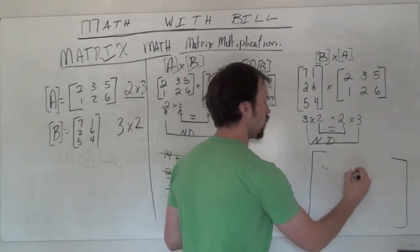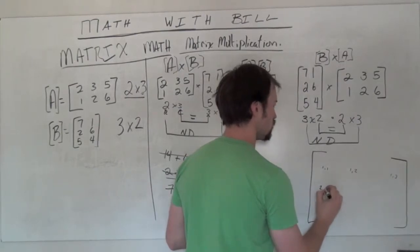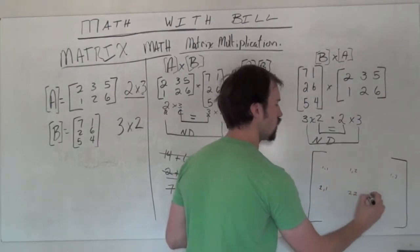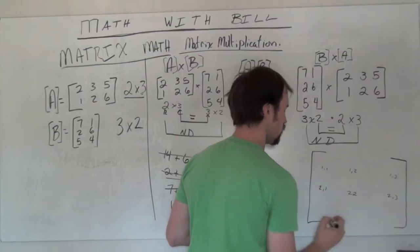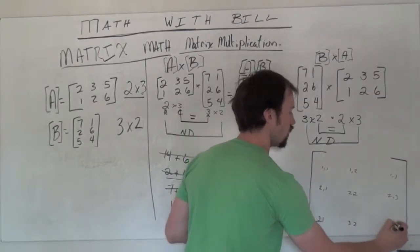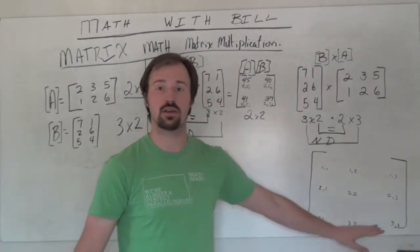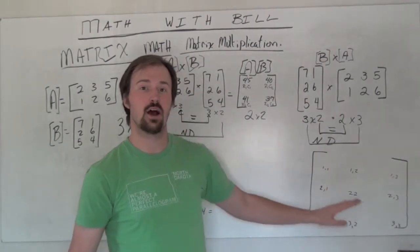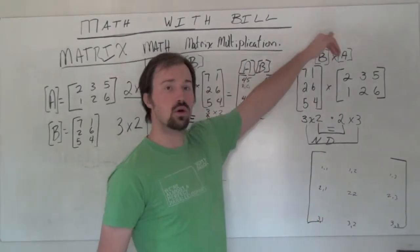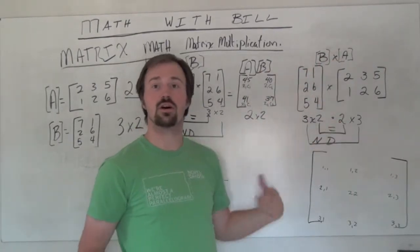I've got a 1-1, 1-2, 1-3, 2-1, 2-2, 2-3, 3-1, 3-2, 3-3. These are just all of my entry positions that I'm filling in down here to help me realize which row times which column, which row of the first times which column of the second.